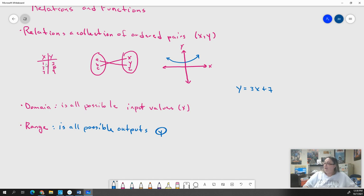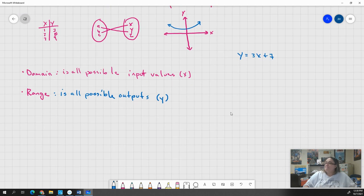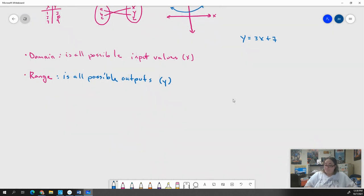So your domain is your inputs or your X values, and your Ys are your range, your output. So I don't know why it made a circle. It's supposed to be a parentheses. And that's all we really need to kind of know when it talks about relations because we're moving into functions, and those are just the things we need to know about relations going into functions.